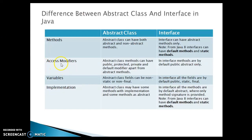When we compare access modifiers, in Java you have four access modifiers: public, protected, default, and private. In an abstract class, methods can have public, protected, private, or default modifiers. But in an interface, methods are by default public abstract only. When we talk about variables or constants, abstract class fields can be non-static or non-final. But in an interface, all fields are by default public static final, so an interface contains only constants.